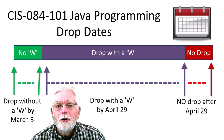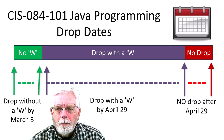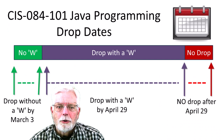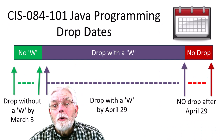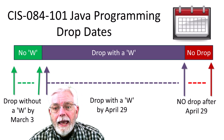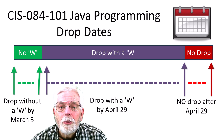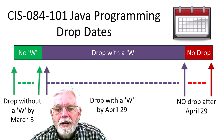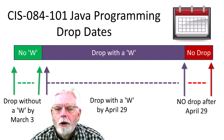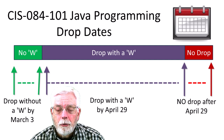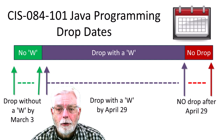If you need, you can drop the Java Programming class by March 3, and nothing will show up on your transcript. If you drop by April 29, a W will show up on your transcript indicating that you signed up for the class and did not complete it. You are not able to drop the class after April 29.